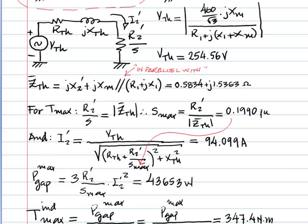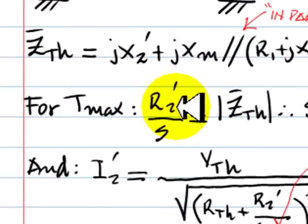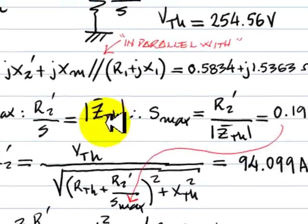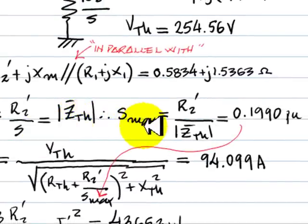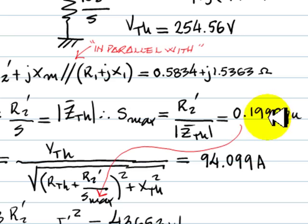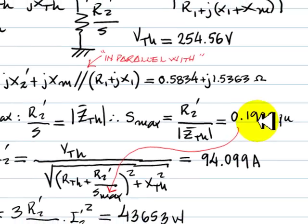For maximum torque, we need R2' over S to equal the absolute value of the Thevenin impedance. From there, we determine Smax = 0.1990. That is approximately 20% slip for maximum torque.